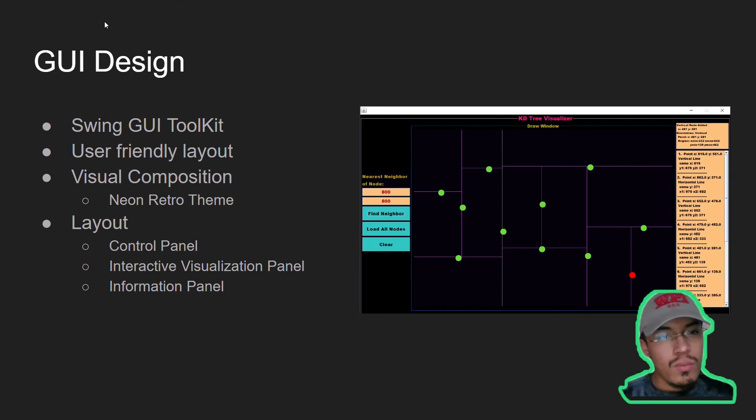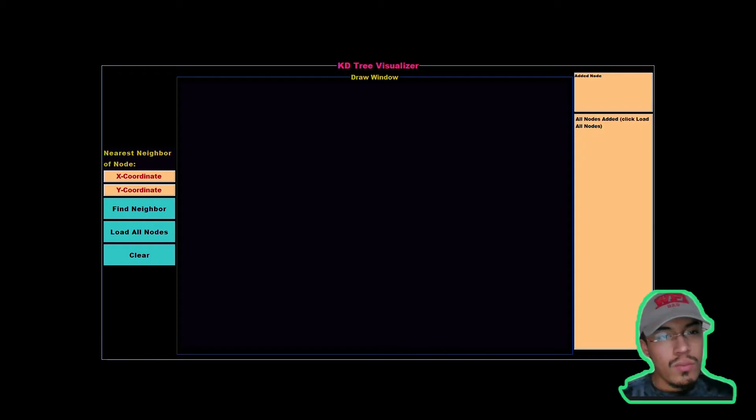Now, we will show you how to use the GUI. This is the KD-tree visualizer. To use it, just click with your mouse on the draw window. This will add a node, as you can see right here, and it will give you the information as the orientation of this node is vertical, the points, and the regions.